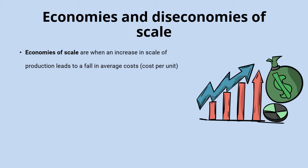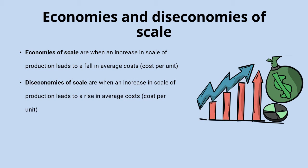There are a huge number of reasons for this, which we are going to look at throughout this video. Equally, you might have a situation where businesses or industries get so big that the increase in scale of production starts to actually lead to an increase in average cost — an increase in the cost per unit of output produced. And that is called diseconomies of scale.